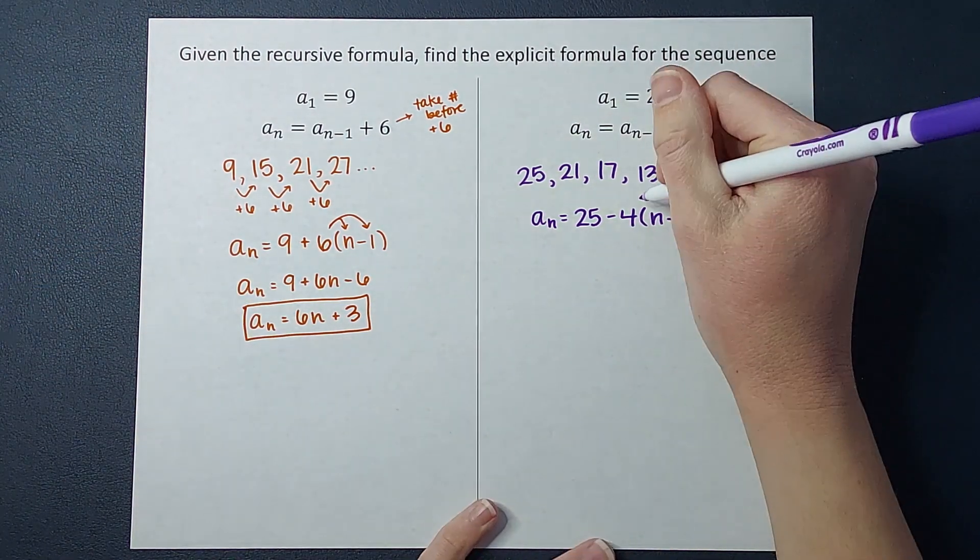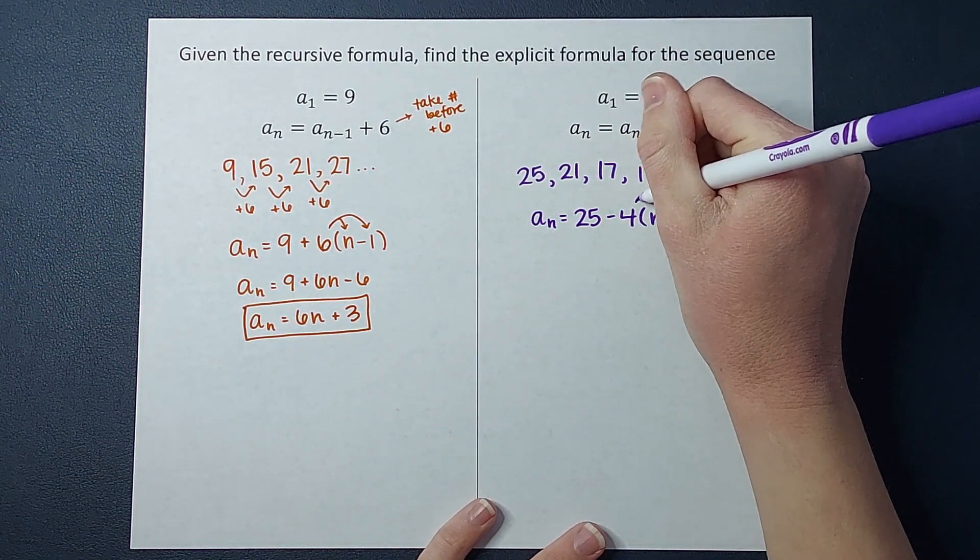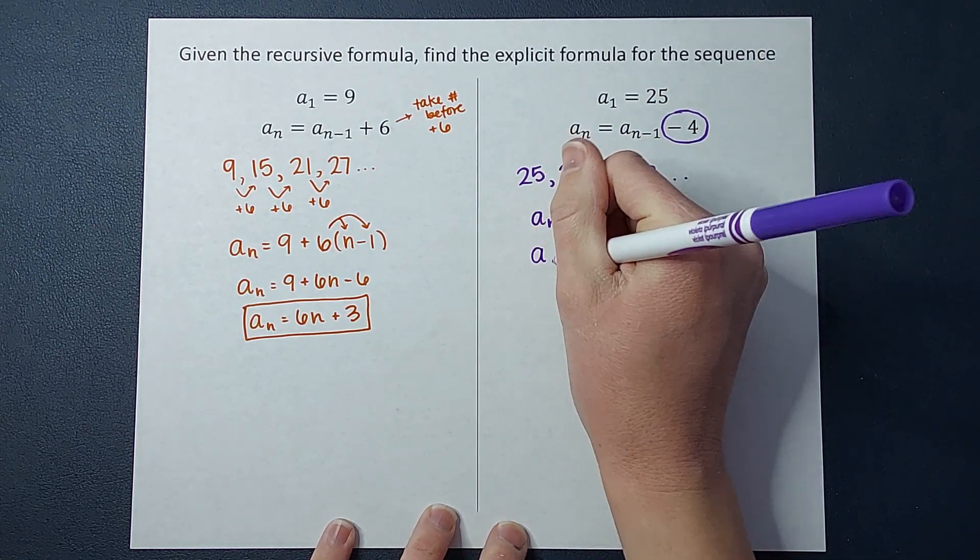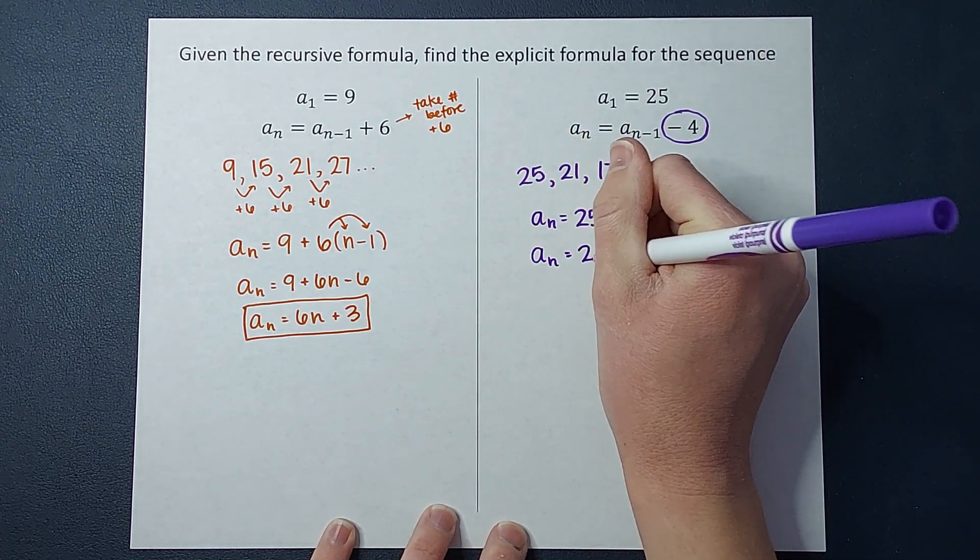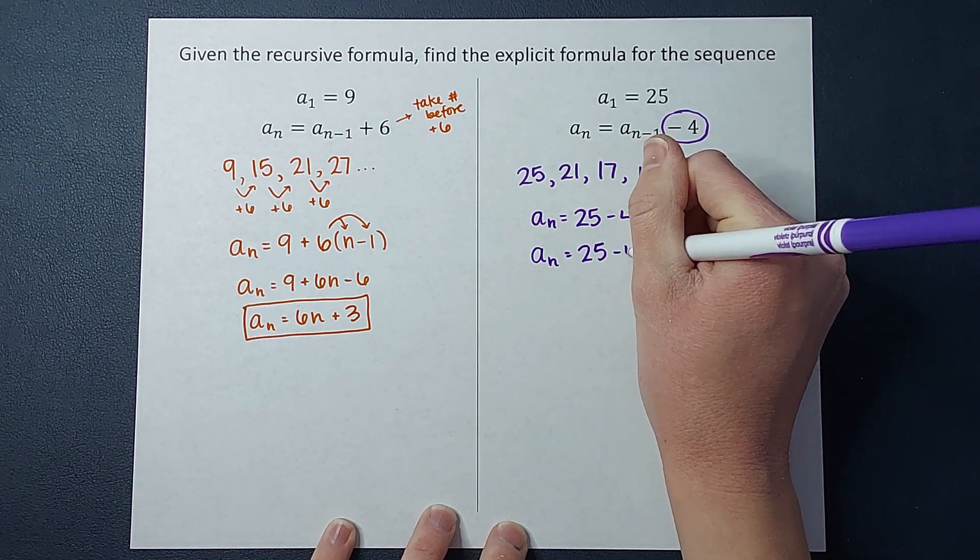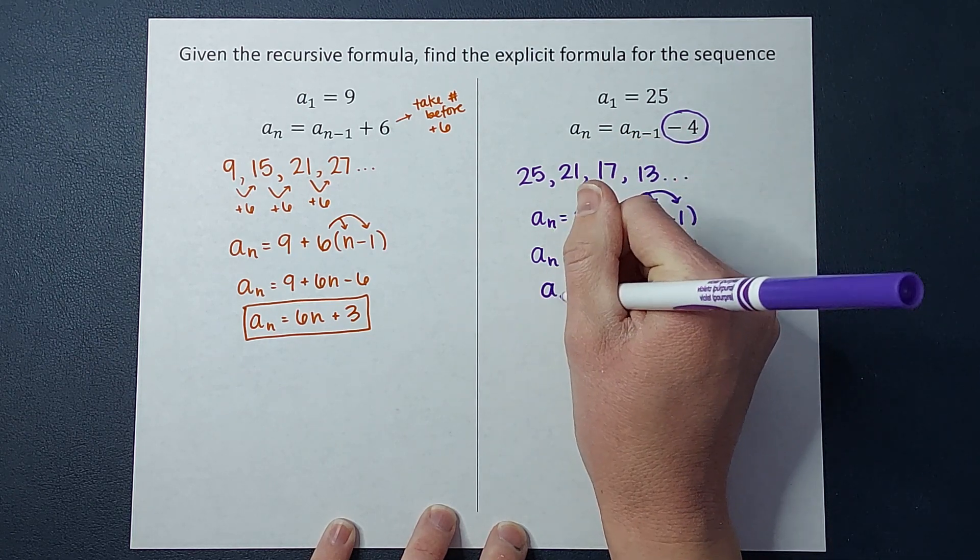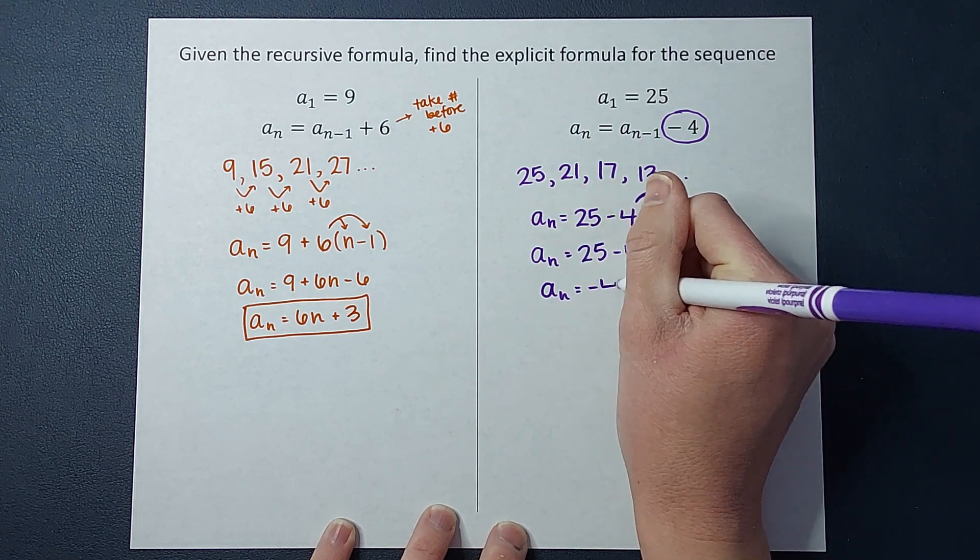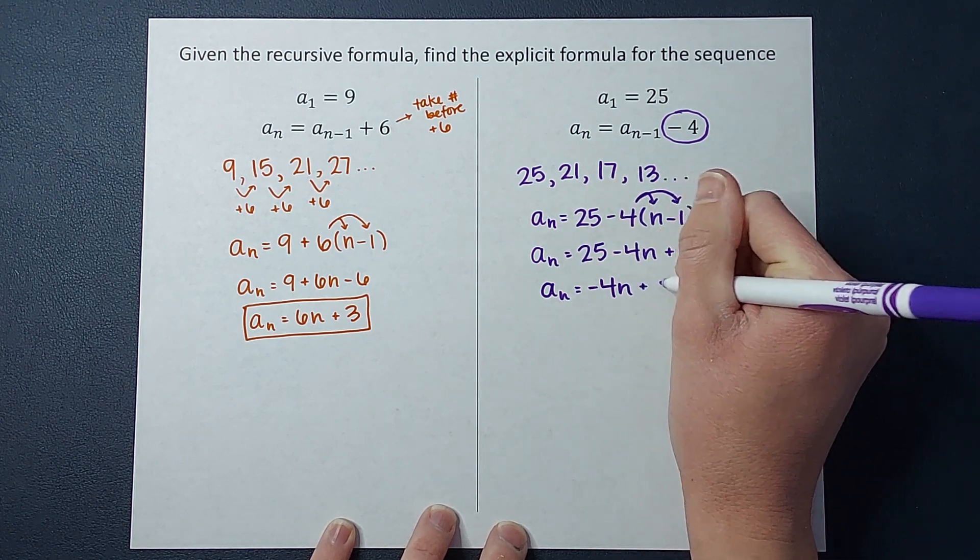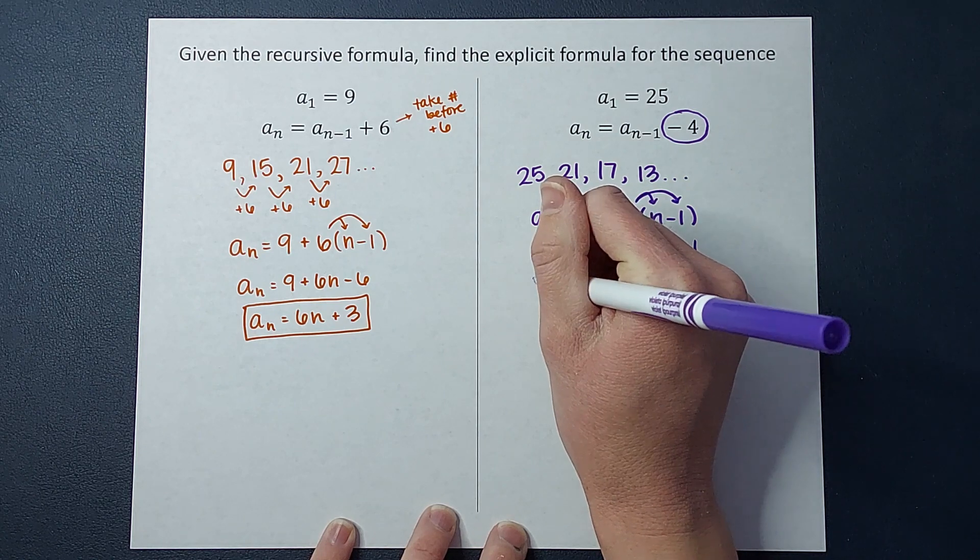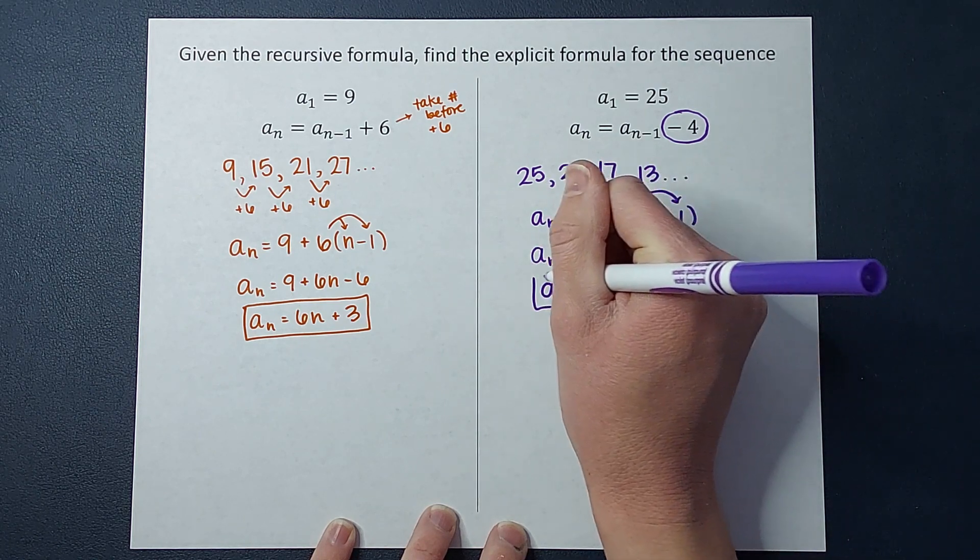And then we'll simplify it in case that is what your teacher or you prefer. So we end up with a sub n equals 25 minus 4n plus 4. And we continue to simplify down and get negative 4n plus 29.